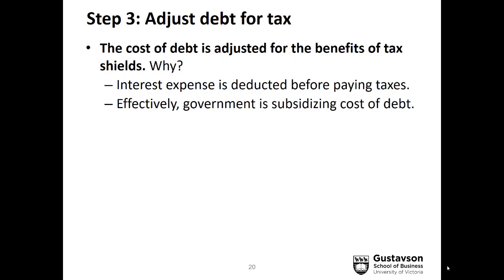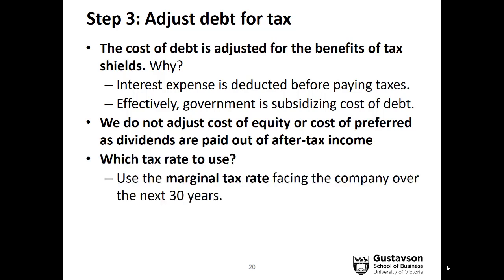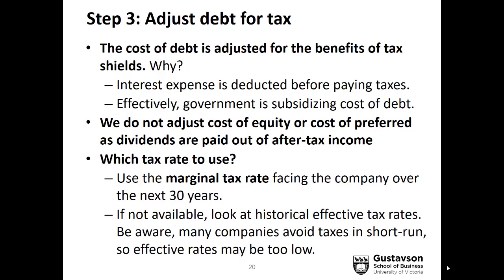Step three: adjust the cost of debt for taxes. This adjustment reflects that interest expense is paid prior to paying taxes. Effectively, the government is subsidizing the cost of debt by allowing the company to repay lower taxes. We do not adjust the cost of equity or preferred because dividends are paid out of after-tax income. You always use the marginal tax rate — the rate the company is expected to pay in the future for the next 30 years, not the effective rate, which may be lower because companies often find ways to reduce taxes in the short run.